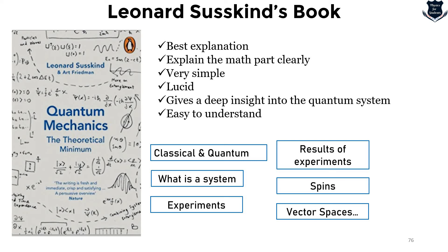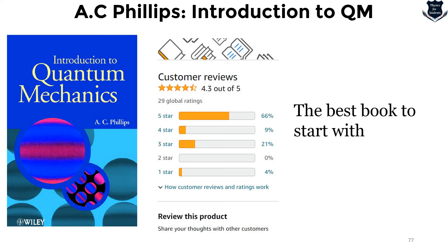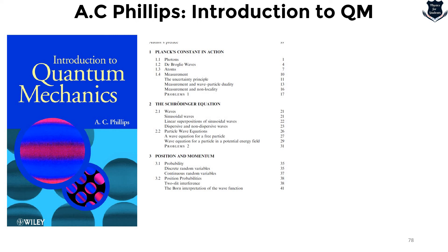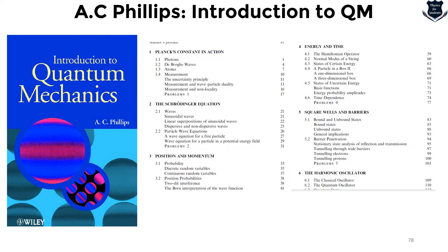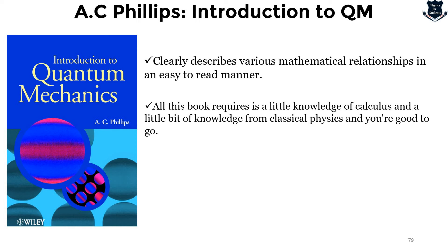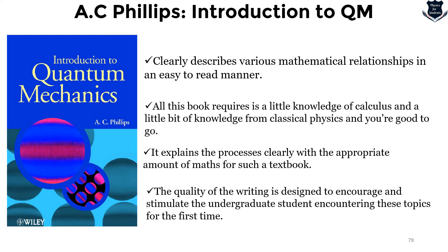My second recommendation for quantum mechanics, once you have a foundational understanding, is A.C. Phillips' Introduction to Quantum Mechanics — the best book to start with for a more intensive treatment. It is a thick, intensive book covering a very good amount of quantum mechanics, clearly describing mathematical relationships and possessing exactly the appropriate amount of mathematics — no exaggeration. The quality of writing is very encouraging and will help grow your interest to learn more.